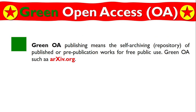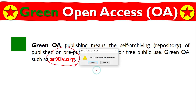That is basically called gold open access. Now, green open access is not that common. Green open access means self-archiving, like a repository. I am a researcher and I want to upload my article before publication — this is also called a preprint. For example, I have done some research and I just want to make it available online for somebody to get benefits, and it is still not published somewhere. That is basically called green open access.